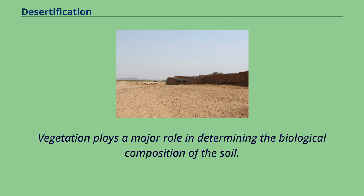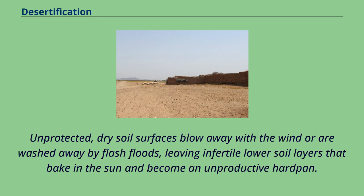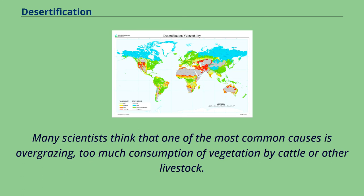Vegetation plays a major role in determining the biological composition of the soil. Studies have shown that in many environments, the rate of erosion and runoff decreases exponentially with increased vegetation cover. Unprotected dry soil surfaces blow away with the wind or are washed away by flash floods, leaving infertile lower soil layers that bake in the sun and become an unproductive hardpan. Many scientists think that one of the most common causes of desertification is overgrazing — too much consumption of vegetation by cattle or other livestock.